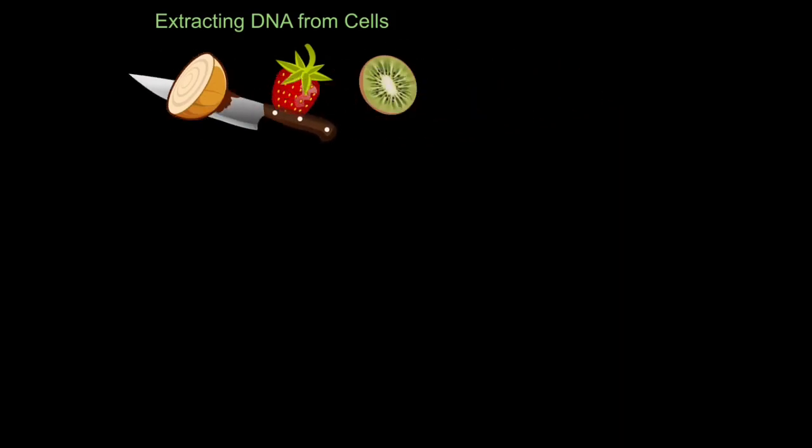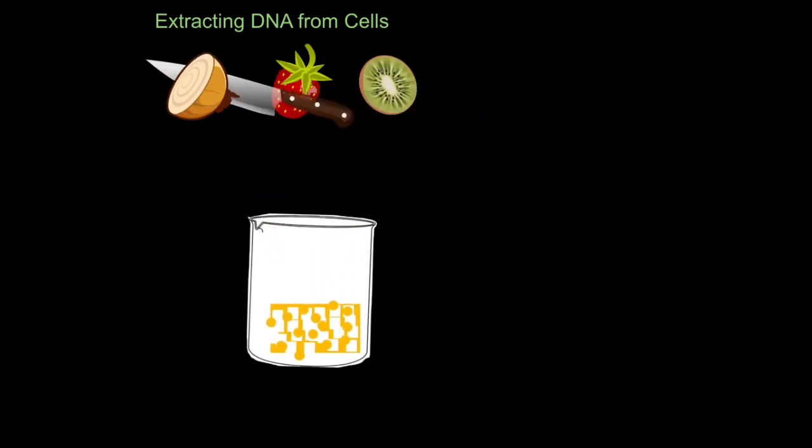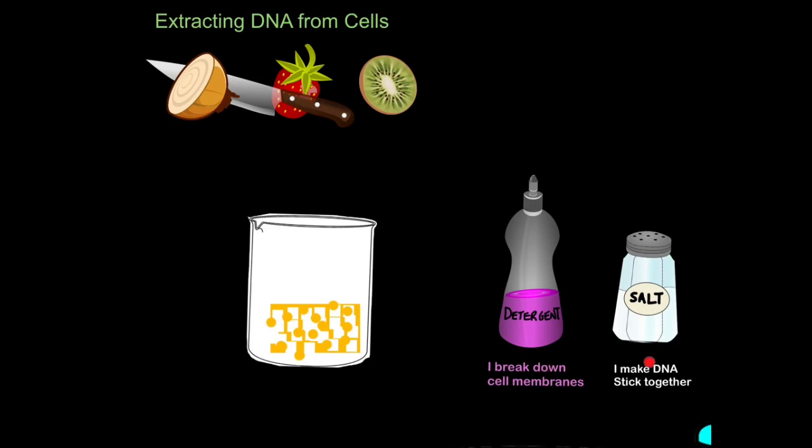Firstly, take your onion and chop it up. Once you've chopped it up, put it into a beaker. Then you will need to add two things. Firstly, detergent, such as washing up liquids, because that will break down the cell membranes.